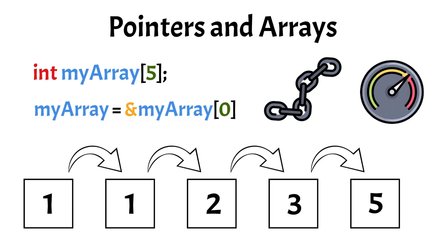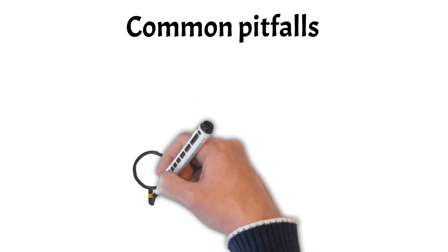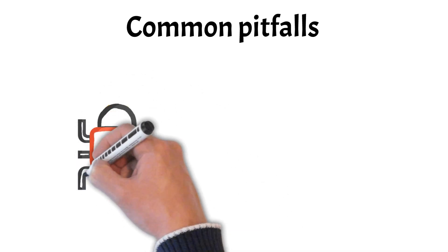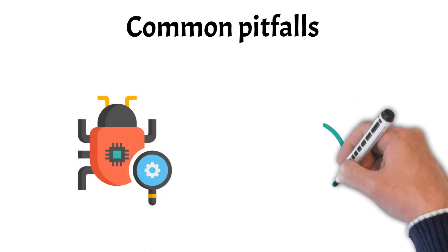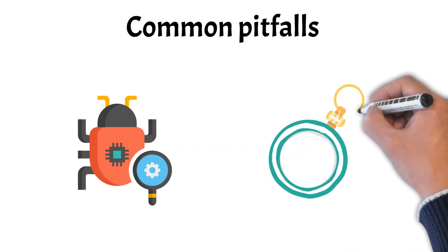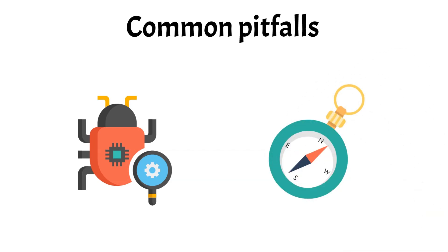The interplay between pointers and arrays is crucial for tasks such as dynamic memory allocation, efficient data manipulation, and the implementation of complex data structures. Working with pointers can be tricky, especially for beginners, and often leads to unexpected errors and bugs in the code. To help you navigate these challenges, let's take a closer look at a few of the most common pitfalls when working with pointers along with their respective solutions.